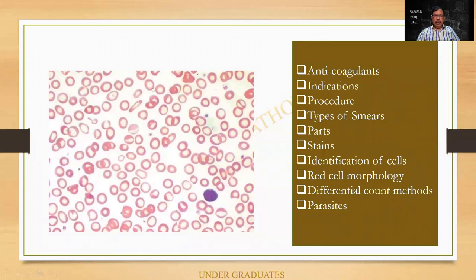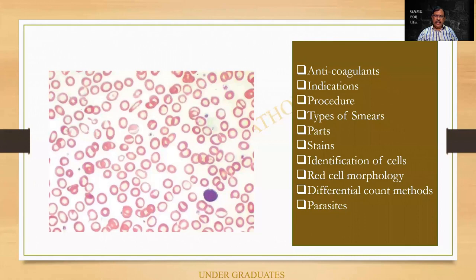So I will not go into the contents of this one, but what are we going to cover in today's class? It starts with anticoagulants, indications, procedure, types of smears, parts of the smear, stains, identification of the cells, morphology, differential count, and parasites.